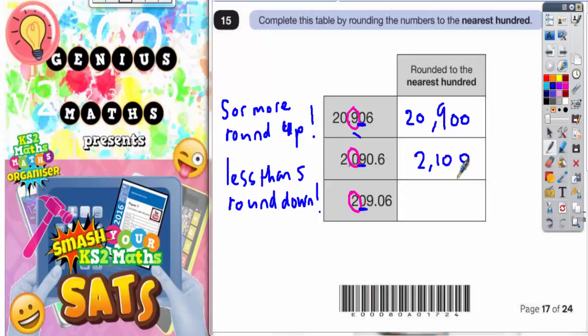The final one is 209.06. Well, the next digit after the 100 digit is zero, and that is less than five, so we're going to round down. So 209 is going to round down to just simply 200.